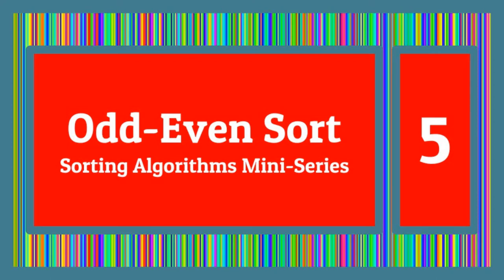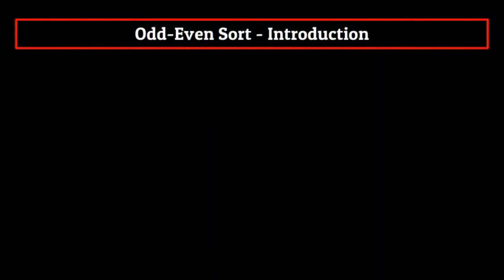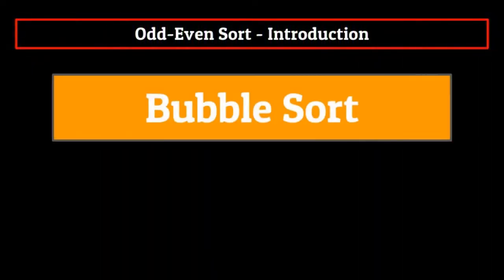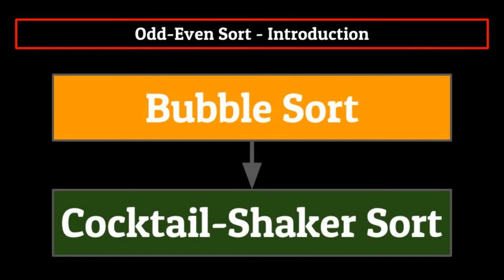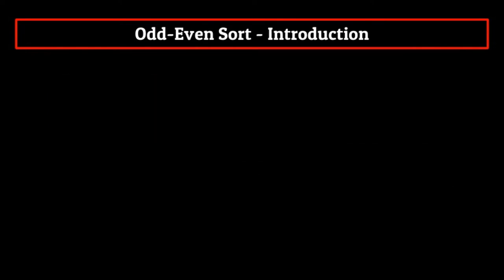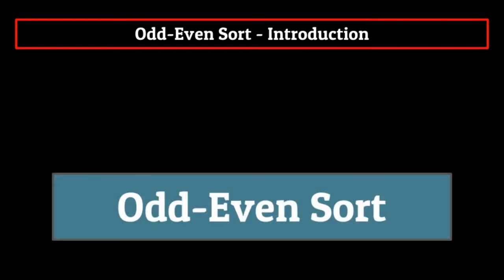Hello everyone, and welcome back to our mini-series on sorting algorithms. In the previous two episodes, we've discussed both bubble sort and a derivation of bubble sort in cocktail shaker sort. Today, we'll be continuing on talking about derivations of bubble sort through a discussion on odd even sort. If you've missed the previous two episodes, they're linked in the description below, as well as in a card in the top right corner. Both of those lectures have useful information for today's episode, so I'd suggest checking them out if you haven't already. With that being said, let's jump into the meat of the video.